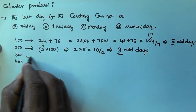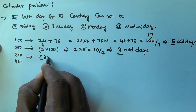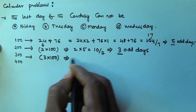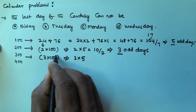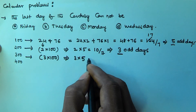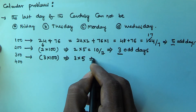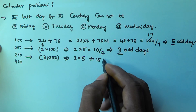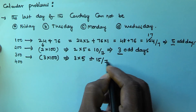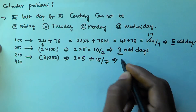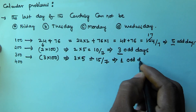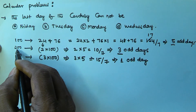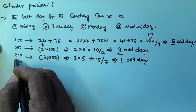For 300 years, that is 3×100 years, so 3×5 = 15 odd days. We divide 15 by 7 and take the remainder, which is 1. So 300 years contains 1 odd day. To summarize so far: 100 years = 5 odd days, 200 years = 3 odd days, 300 years = 1 odd day.